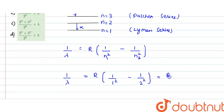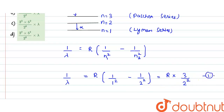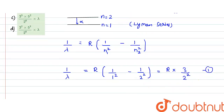This evaluates to R times (1 − 1/4), which equals R times 3/4, or equivalently R times 3 divided by 2 squared. This is our Equation 1.